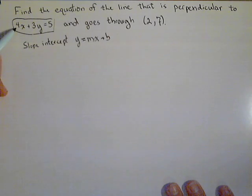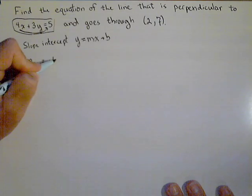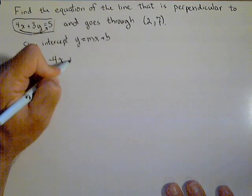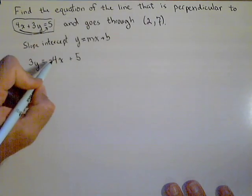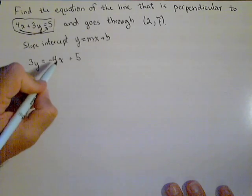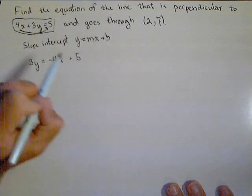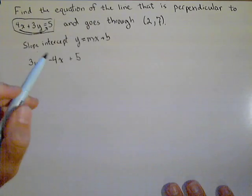So let's take this first equation and solve it for y. First thing we might do is subtract 4x over to the other side. So that'll give us 3y equals negative 4x plus 5. We could write it 5 minus 4x, and that'd be fine. I'm just keeping with our slope-intercept form. So I subtracted 4x off of both sides.